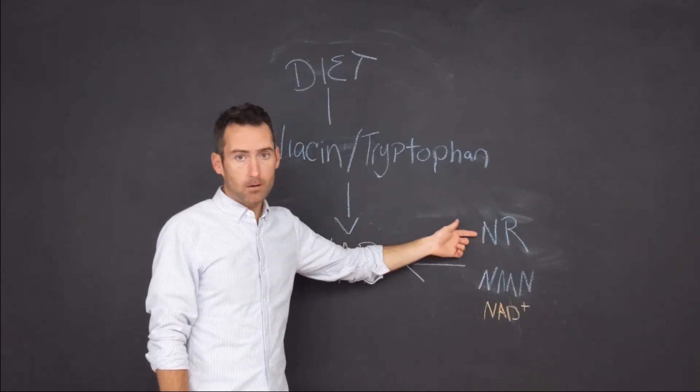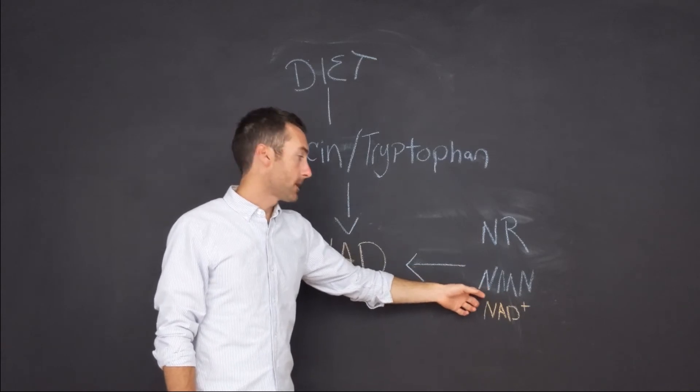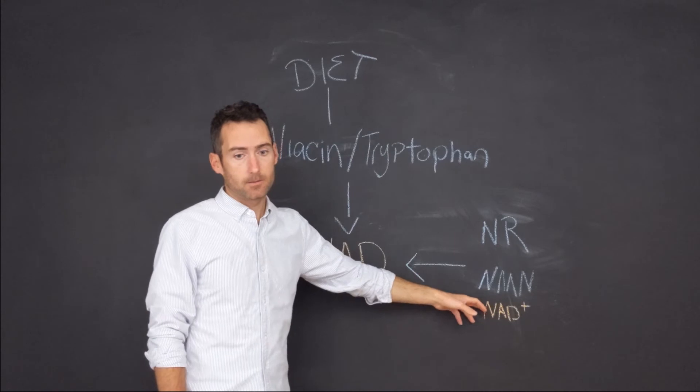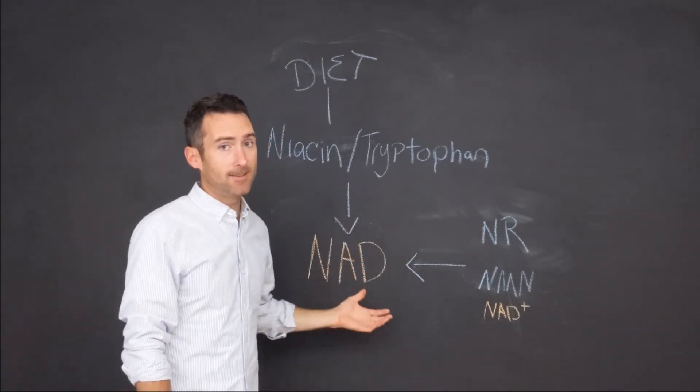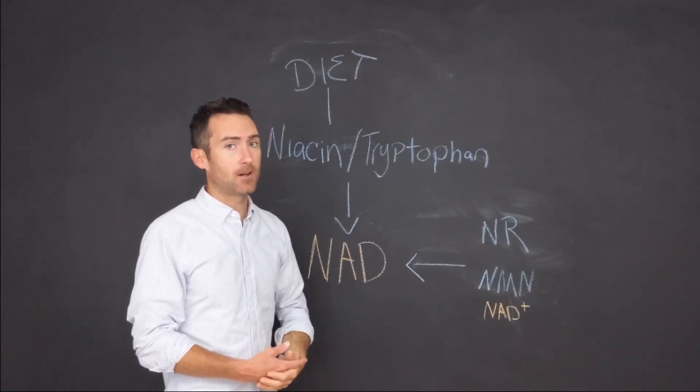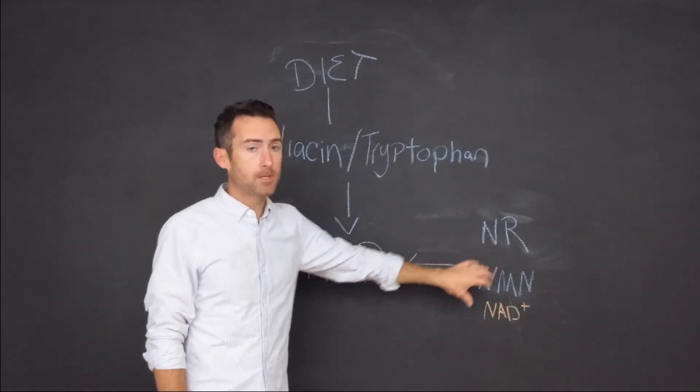supplementation: one is NR, which is nicotinamide riboside; NMN, which is nicotinamide mononucleotide; or NAD+. All of those are going to make NAD. And when we make NAD, we know that it produces ATP, which is the energy currency of the cell. So making sure that you have this in your diet or you're using these as supplementation